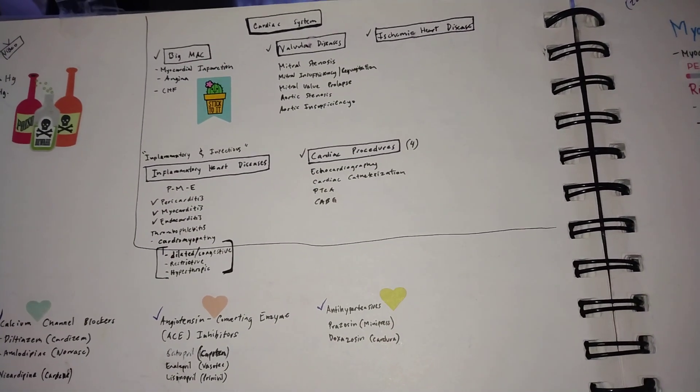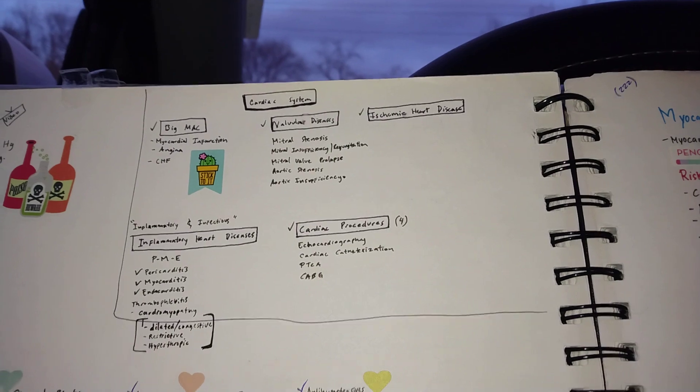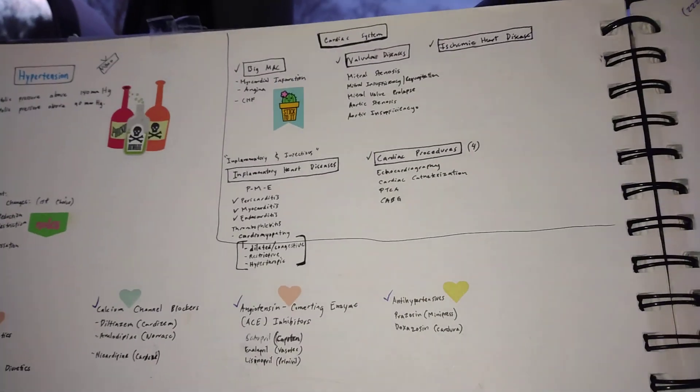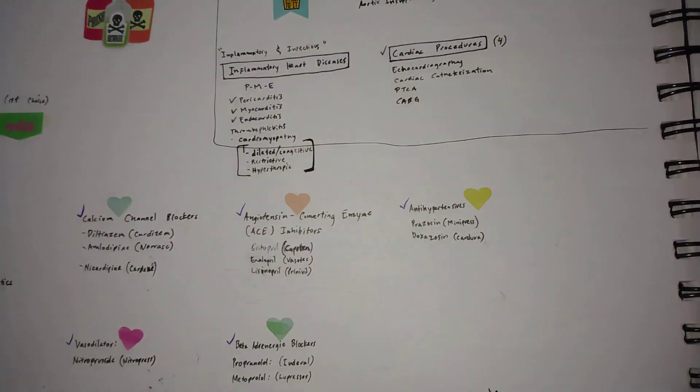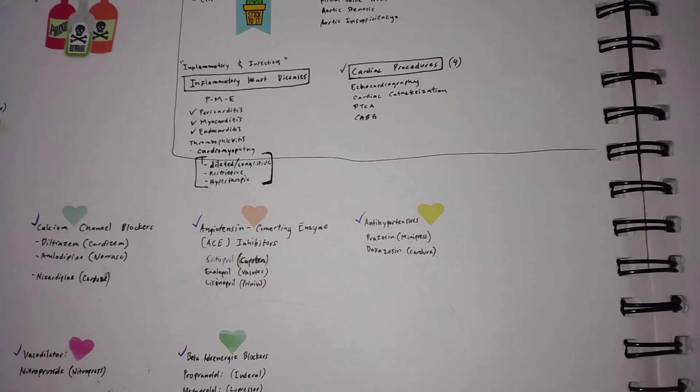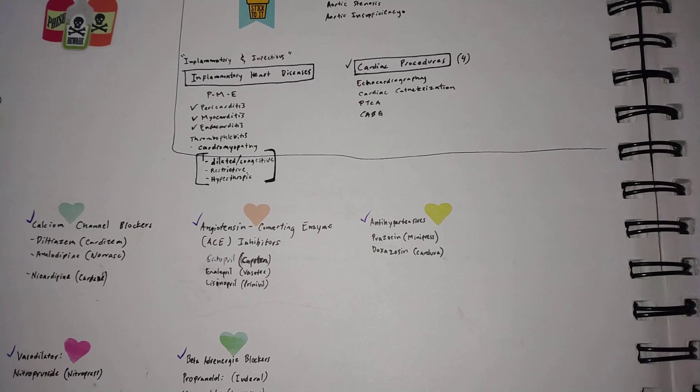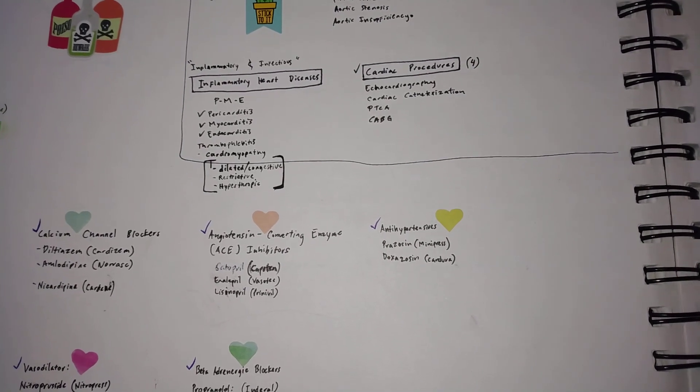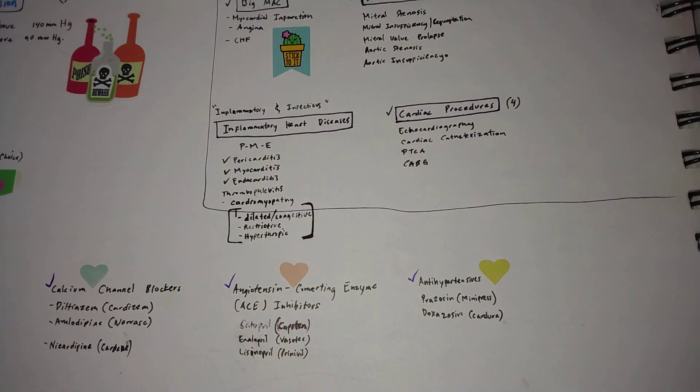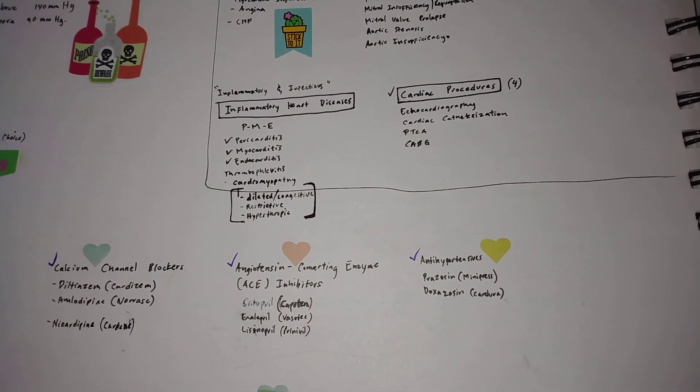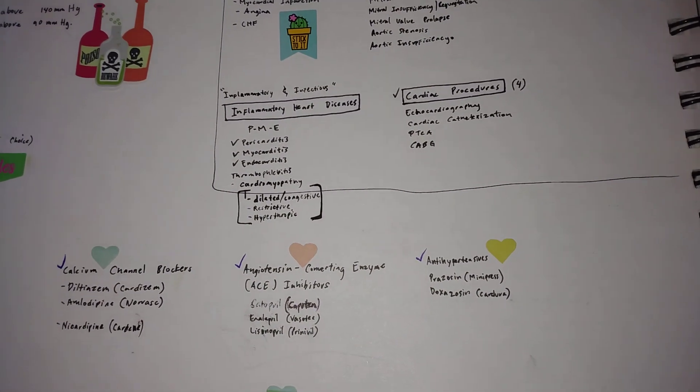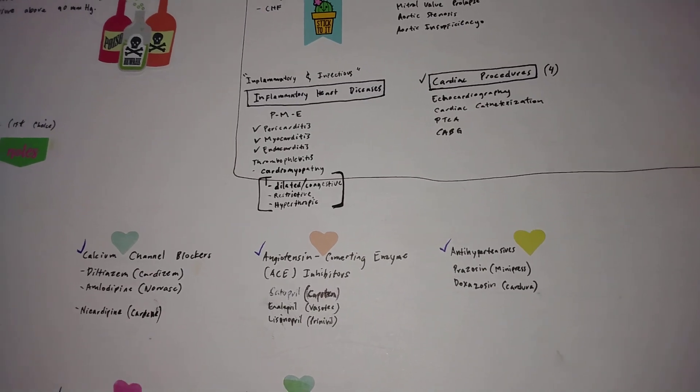Of course, we have a few ischemic heart diseases, and then we're going to go over inflammatory and infective heart diseases. The big three are what we call the PME, which is your pericarditis, your myocarditis, and endocarditis.